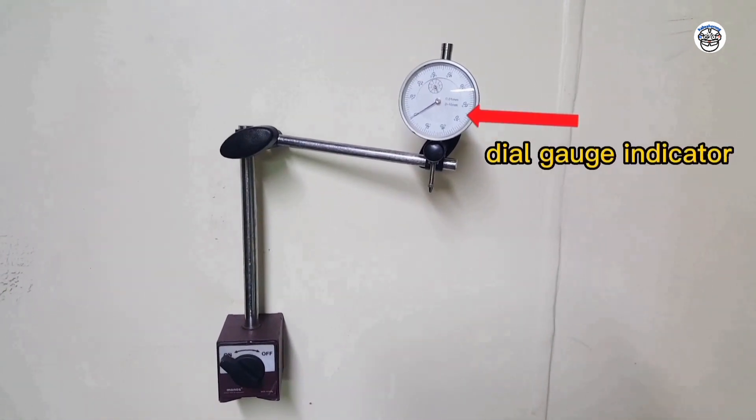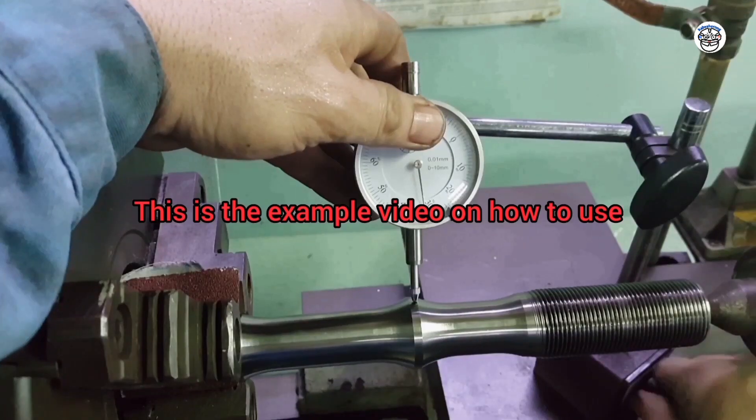Dial gauge indicator. This is the example video on how to use.